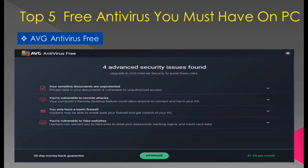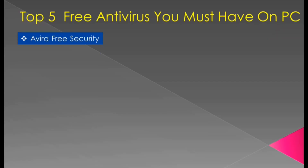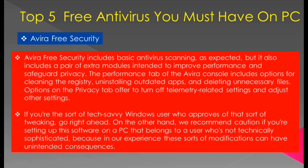Next we have Avira Free Security. Avira Free Security includes basic antivirus scanning but also includes a pair of extra modules intended to improve performance and safeguard privacy. The performance tab of the Avira console includes options for cleaning the registry, uninstalling outdated apps, and deleting unnecessary files. The privacy tab offers options to turn off tracking-related settings and adjust other security settings.